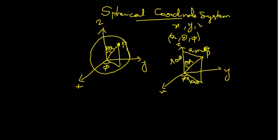Now draw a perpendicular from this point and you will get a rectangular shape. This component is R sin theta. So what is X? X is equal to R sin theta cos phi. And what about Y? Y is equal to R sin theta sin phi.